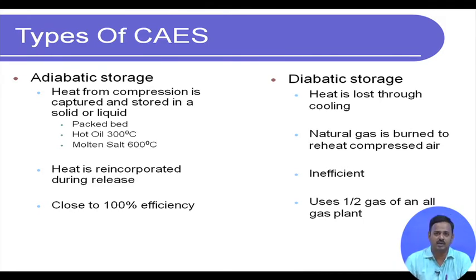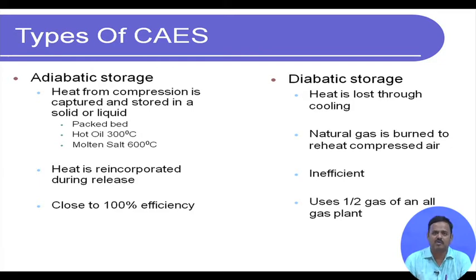Diabatic storage: heat is lost through cooling, and a combustion chamber — typically burning natural gas — is used to reheat the compressed air. It is inefficient, but the amount of natural gas used is still much lower — roughly half or less — than what would be needed to operate a standalone gas turbine plant using natural gas as the combustion fuel.